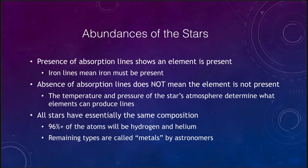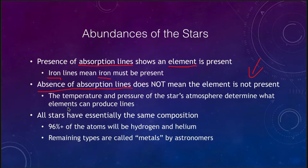Now how can we use the spectrum to determine abundances — what are the stars made of? The presence of absorption lines of a specific element shows that the element is present. If we see iron lines in a star, then iron must be present in the atmosphere of the star. However, the converse is not necessarily true — the absence of absorption lines does not necessarily mean the element is absent, because the temperature and pressure in the star's atmosphere determines what elements can produce lines. A very cool star will not produce helium lines, but that does not mean helium is not there.